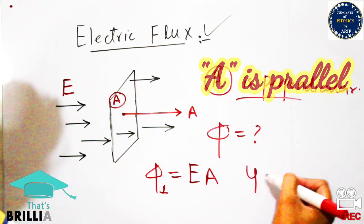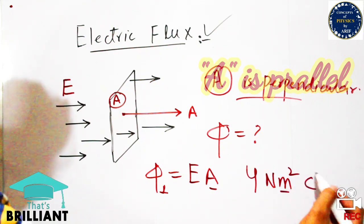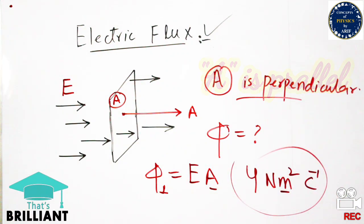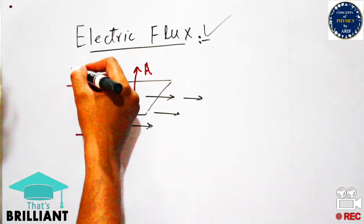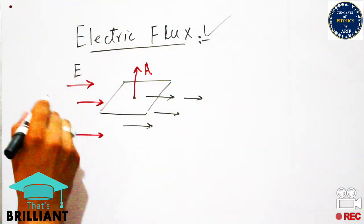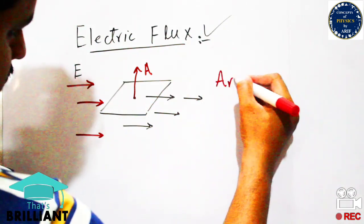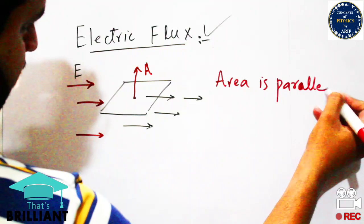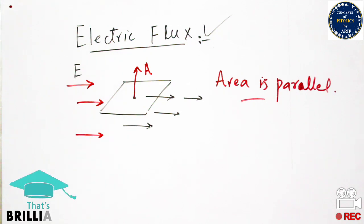For example, if the number of electric field lines passing through this area is 4, then the flux will be 4. In the other case, electric flux can be found when the area is placed parallel but its normal is perpendicular to the electric field lines — electric field lines are passing through some area, but theoretically no electric field lines pass through this area.